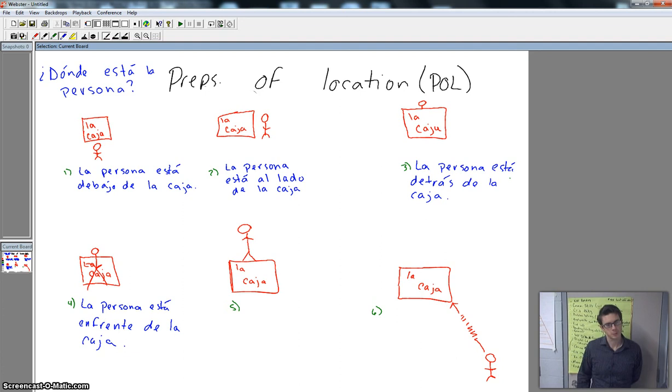Now take a look at número cinco. Vamos a ver el número cinco. You got la caja. Hay una persona arriba. There's a person up. There's a person above. How are we going to give this person's location in relation to the box? Well, ¿dónde está la persona? La persona... Está... Encima... De la caja. La persona está encima de la caja. Muy bien. Excelente.